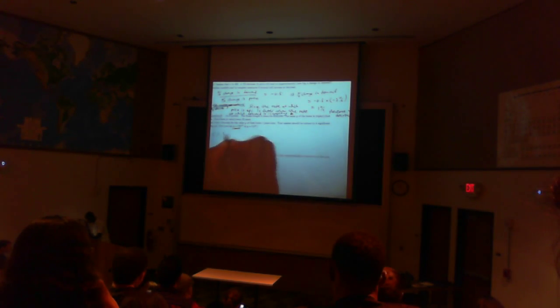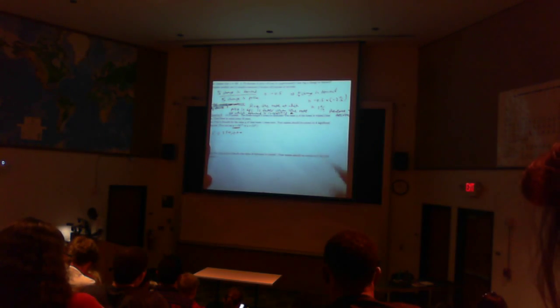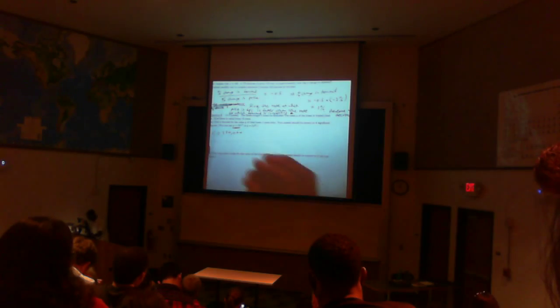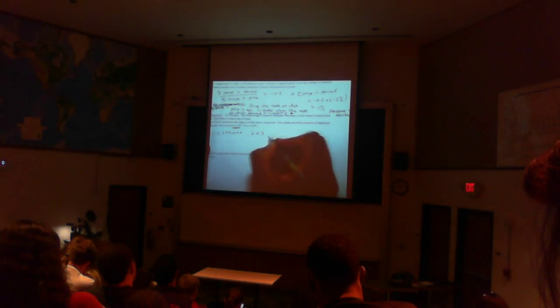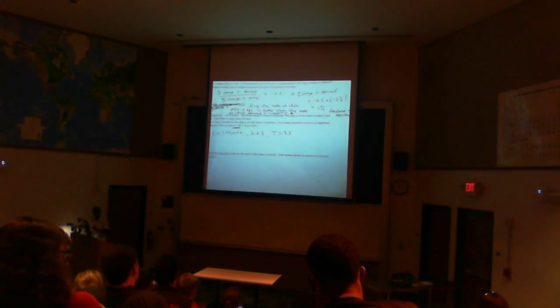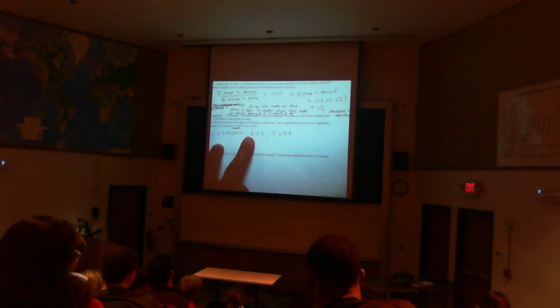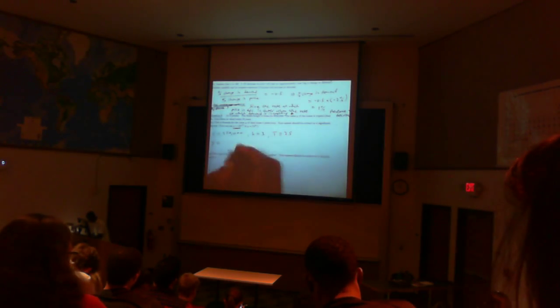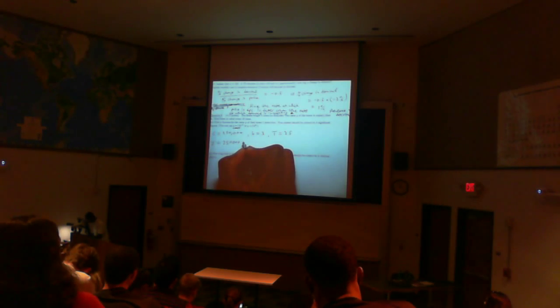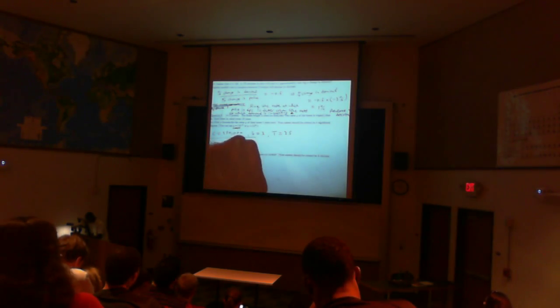the initial amount is 250,000. So we know c is 250,000. What else do we know? The value of the home triples every 25 years, and so b must be 3. Capital T is 25 - that's the time taken for the values to triple. The growth rate is 3 because the value triples every 25 years. So using these parameters, you can write the formula: it's going to be 250,000 times 3 to the t over 25.